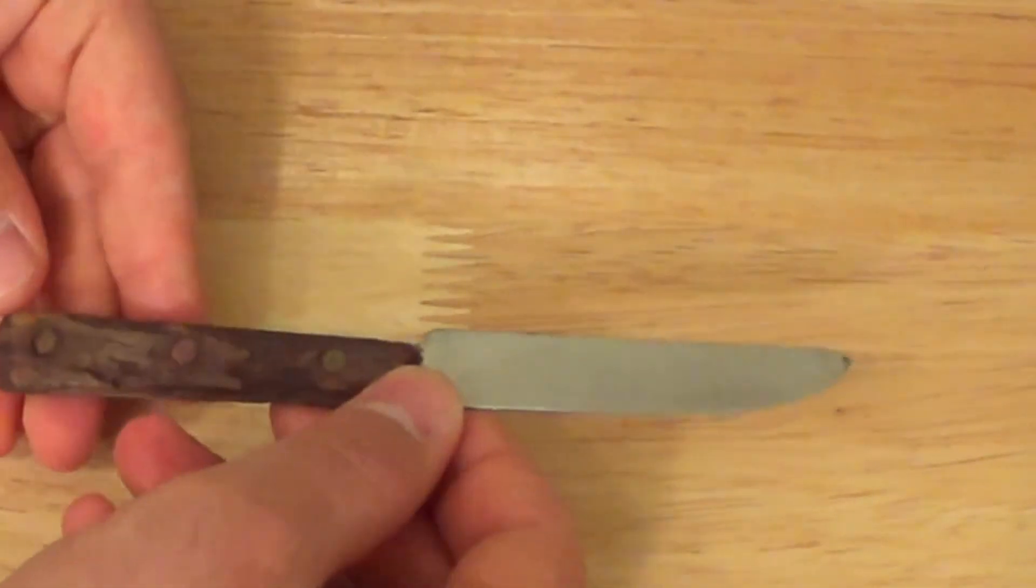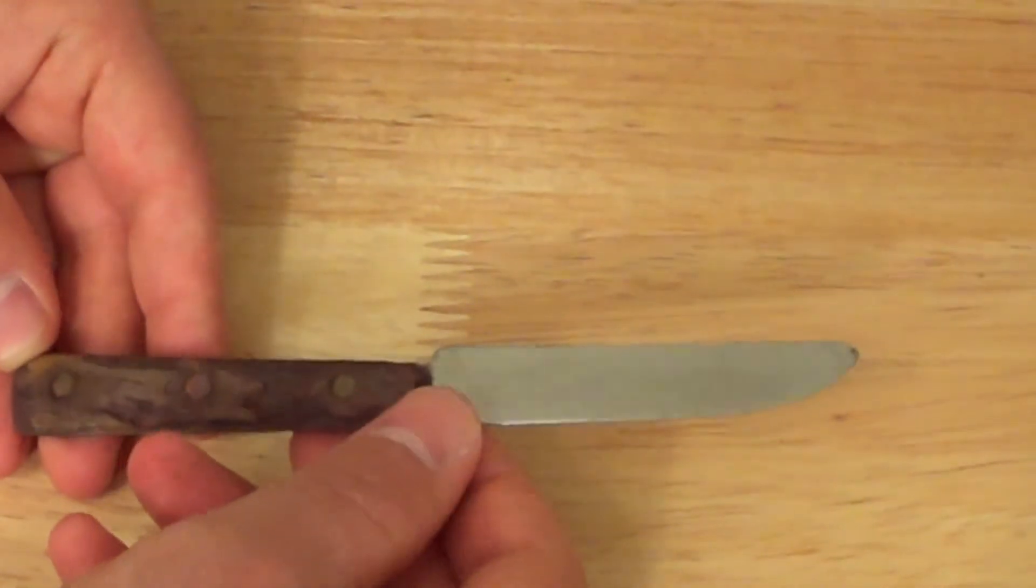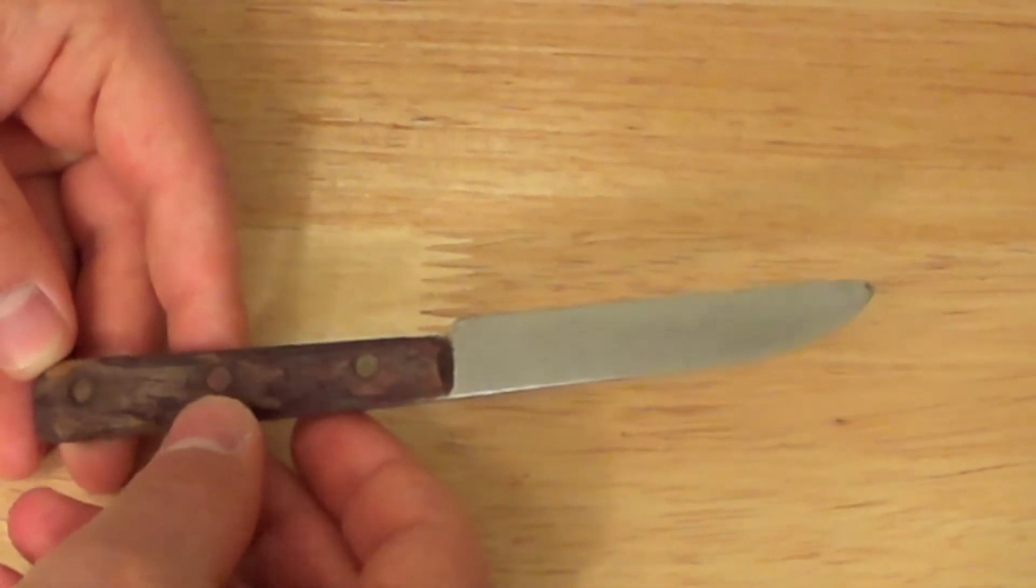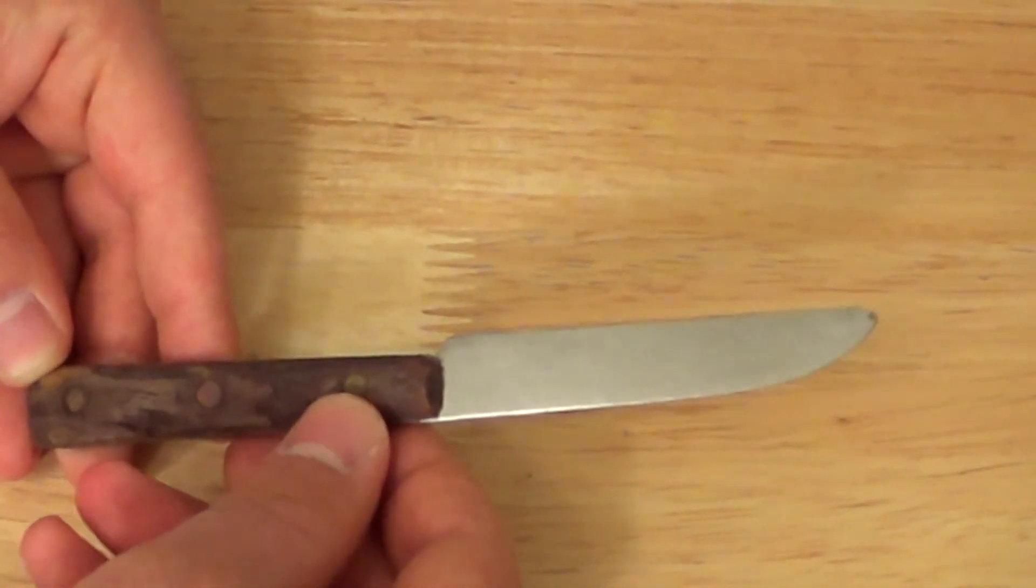The handles, however, are more or less destroyed because they're wood and they've rotted away. It had little brass or copper rivets—I think it's brass.